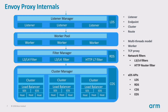A listener is the named address which can be connected by downstream clients. Endpoints are usually the target IP address and port where the proxy can forward the request to. A cluster contains multiple endpoints which behave exactly the same — for example, if three containers are running the same deployed service, there might be three IP/port pairs forming one cluster. A route contains rules that help forward the request to a specific cluster.